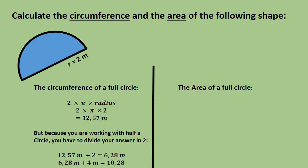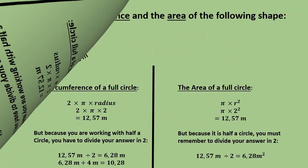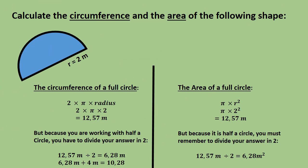Let's have a look at the area of the half circle. The area of a full circle is π radius squared, but because we are working with half a circle, we divide our answer by 2. The radius is 2, so π times 2 squared is 12.57 square meters. Divide by 2 because we are working with half a circle. You don't need to add anything like we did with the circumference — just divide your answer by 2. That gives you 6.28 meters squared.